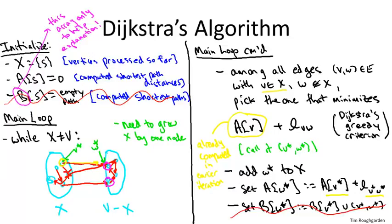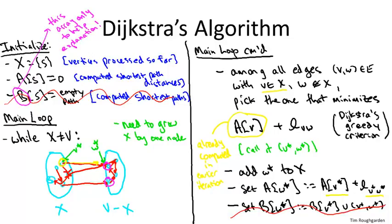In the next quiz, think about the running time of this algorithm if we implemented it more or less as-is according to the pseudocode, without any special data structures. We'll use the notation where M denotes the number of edges and N denotes the number of vertices.